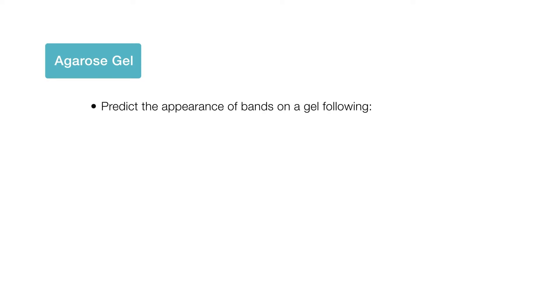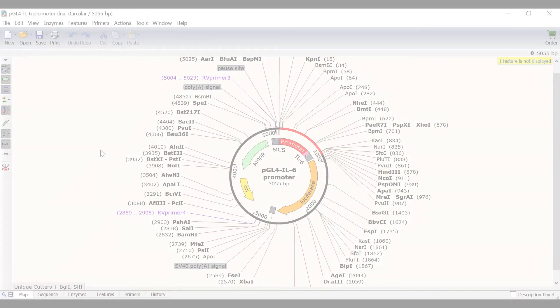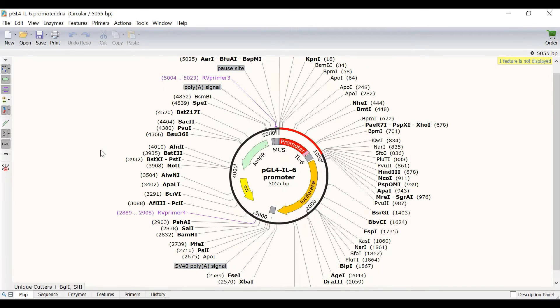In this tutorial, I will show you how to simulate agarose gel electrophoresis in SnapGene. Simulating agarose gels is a useful tool to predict the appearance of bands on a gel following restriction digests or PCR amplification. Within SnapGene, I have a file containing a pGL4 plasmid that includes the interleukin-6 gene promoter.